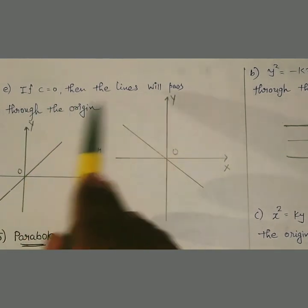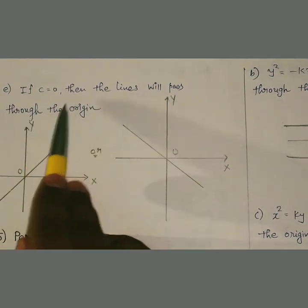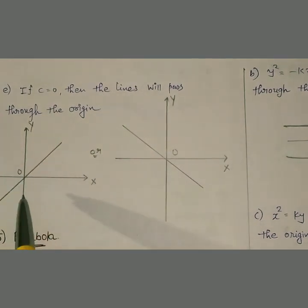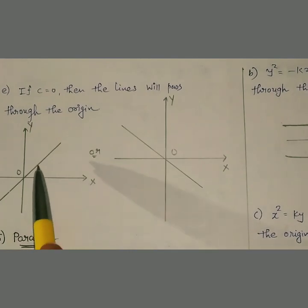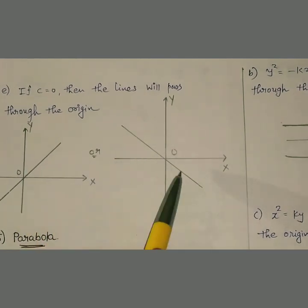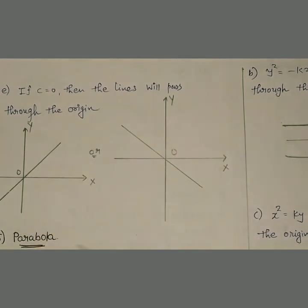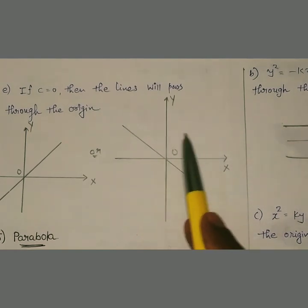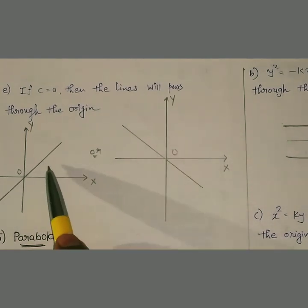Fifth characteristic: if c = 0 — intercept की value 0 है — then the lines will pass through the origin। यहाँ पर आपका slope positive होगा या negative होगा — यह angle पर depend करता है। Angle < 90° है तो positive slope, angle > 90° है तो negative slope।